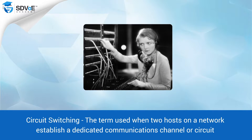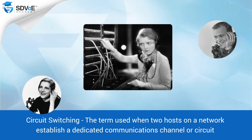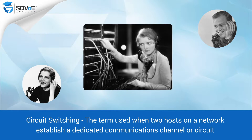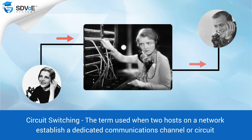One example of an early network which used circuit switching was the analog telephone network. In order for a call to be made from one person to another, switches within the telephone exchanges had to create a continuous wire circuit between the telephones, which then had to stay connected for the duration of the call.